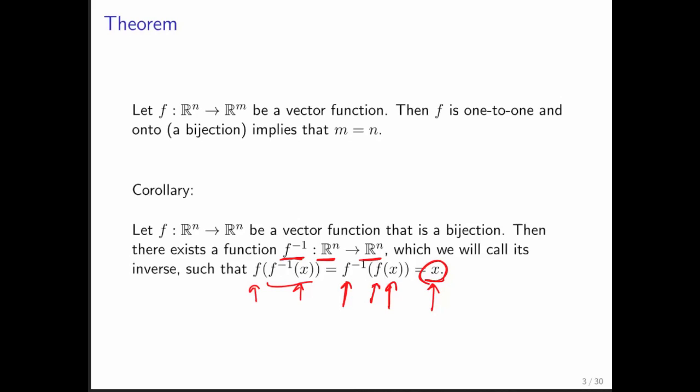In other words, if f from R^n to R^n is a vector function that's a bijection, then there exists a function that undoes what that function does. And again, it's very important to think about it that way.